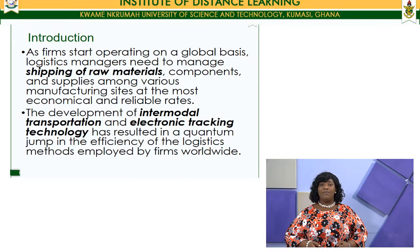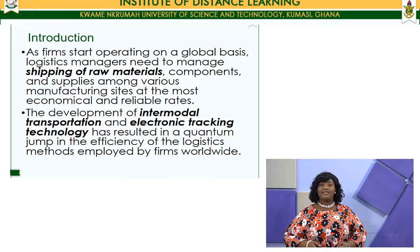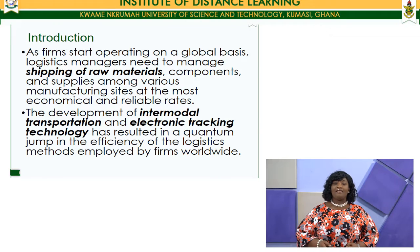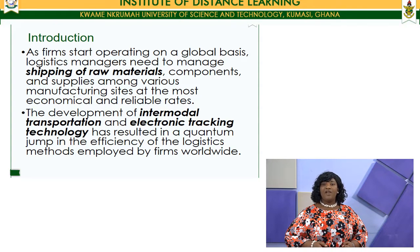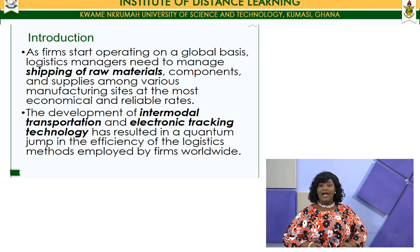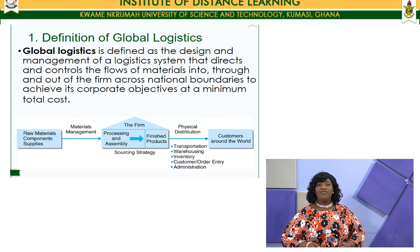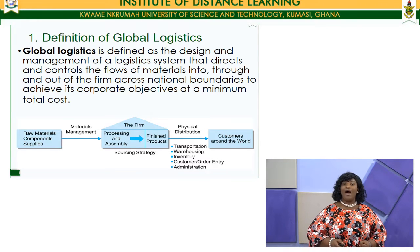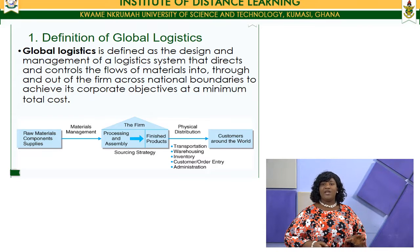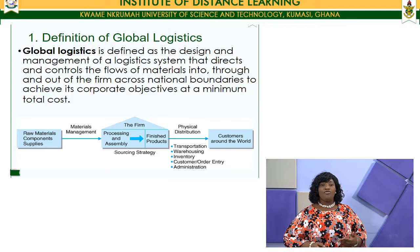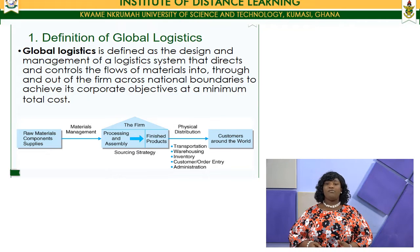As firms start operating on a global basis, logistics managers need to manage shipping of raw materials, components, and supplies among various manufacturing sites at the most economical and reliable rate. The development of intermodal transportation and electronic tracking technology has resulted in a quantum jump in the efficiency of logistics methods employed by firms worldwide. Global logistics is the design and management of a logistics system that directs and controls the flows of materials into and out of the firm across national boundaries to achieve its corporate objectives at a minimum total cost.